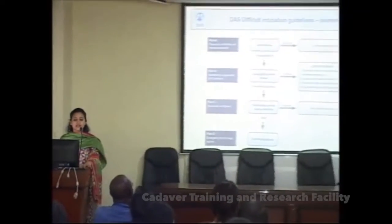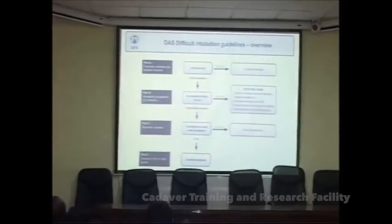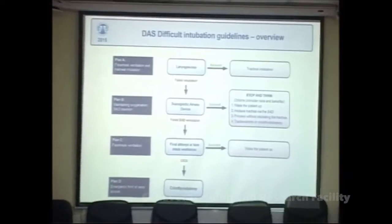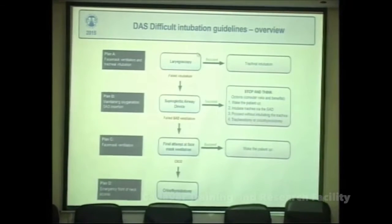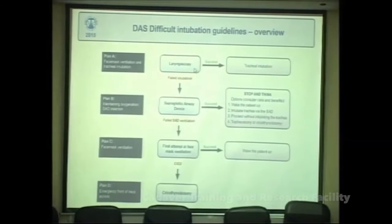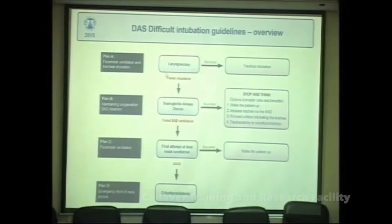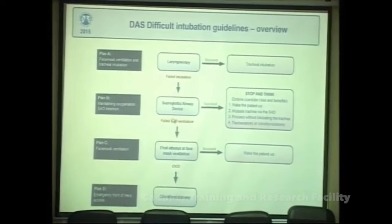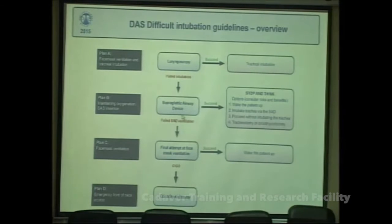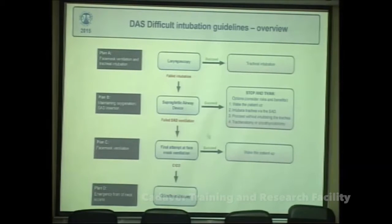The first step is face mask ventilation and tracheal intubation, beginning with laryngoscopy. If intubation fails and we are not able to intubate the trachea, the Difficult Airway Society recommends supra-glottic airway devices. If we are still unable to proceed with those, we need to consider what to do when the supra-glottic airway device has also failed.